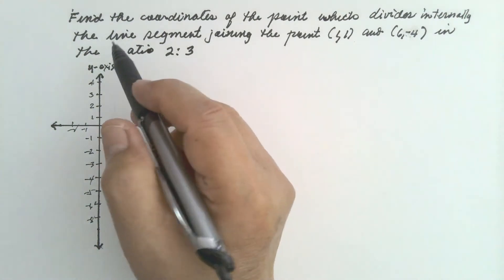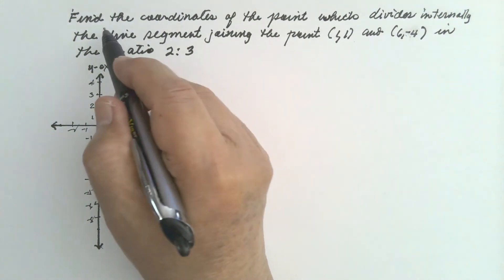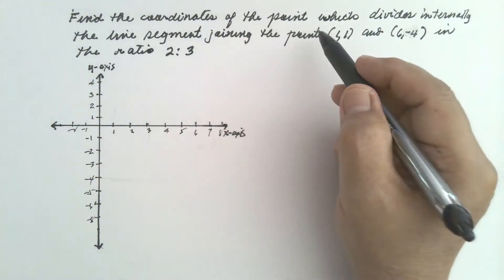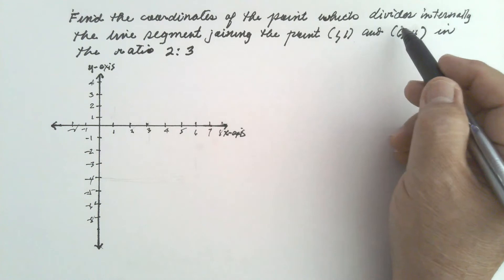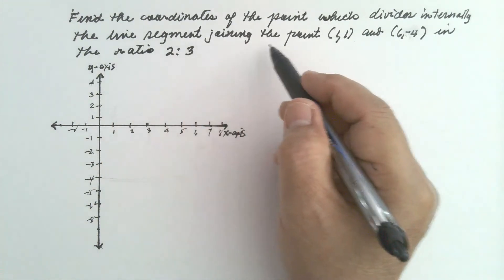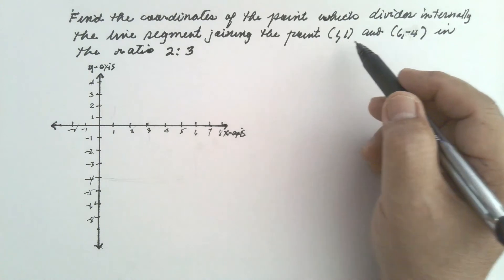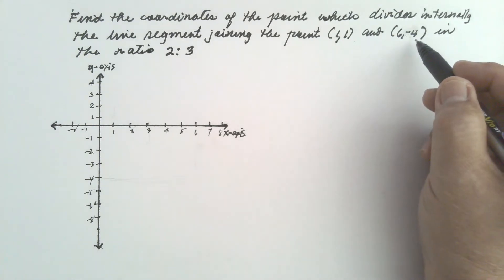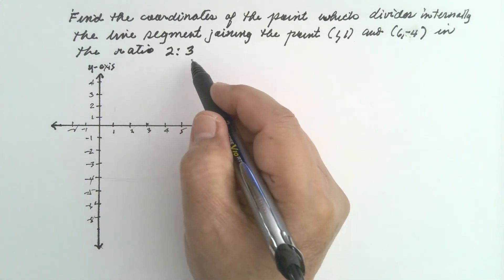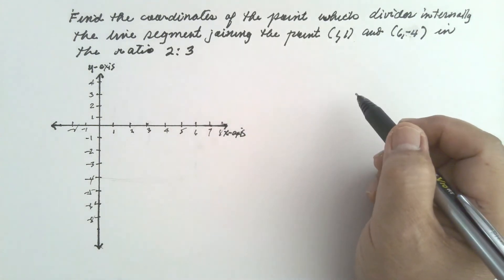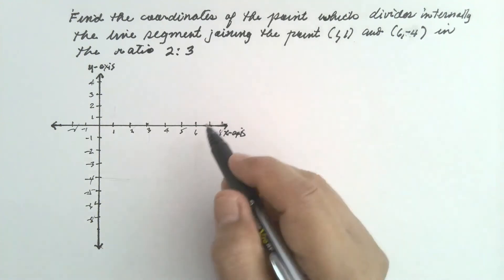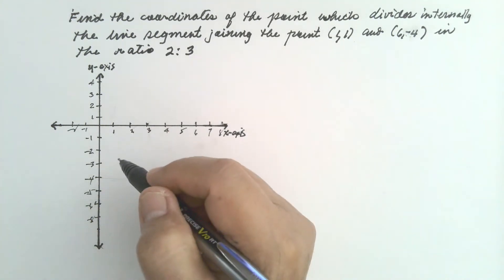Let us solve this problem. Find the coordinates of the point which divides internally the line segment joining the points (1, 1) and (6, -4) in the ratio 2 is to 3. Let us first plot the two points on this coordinate plane.